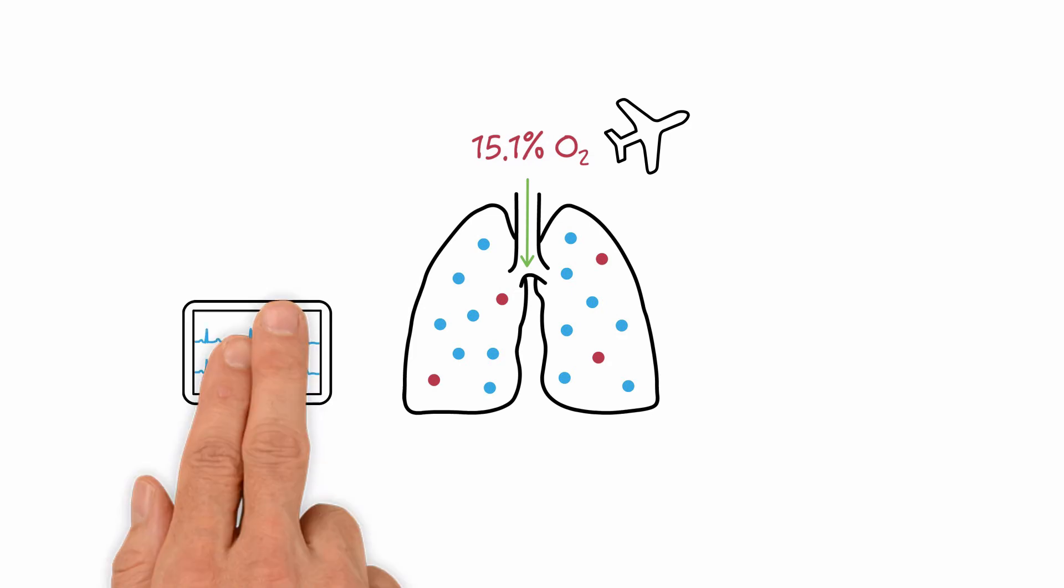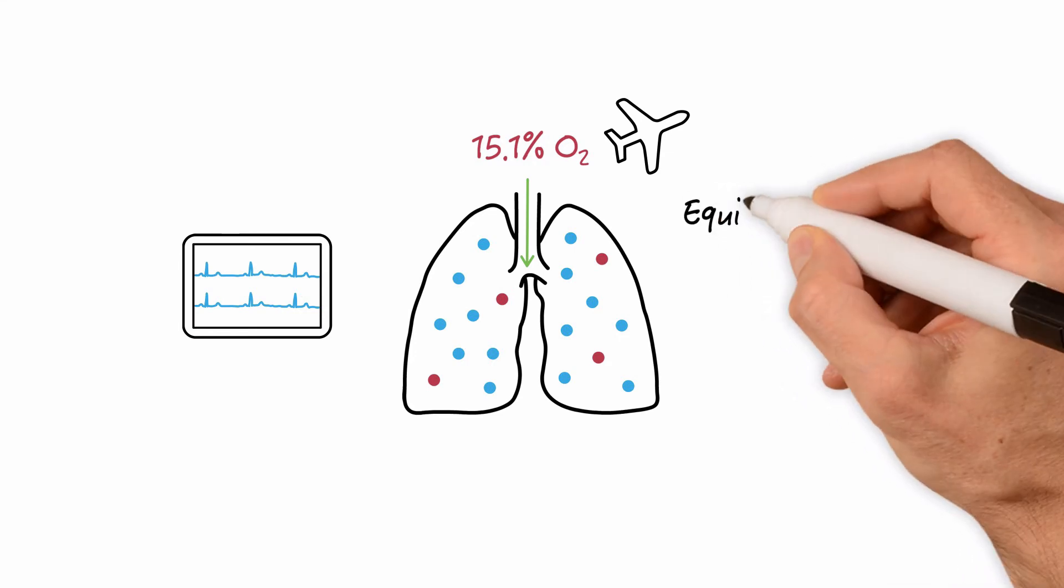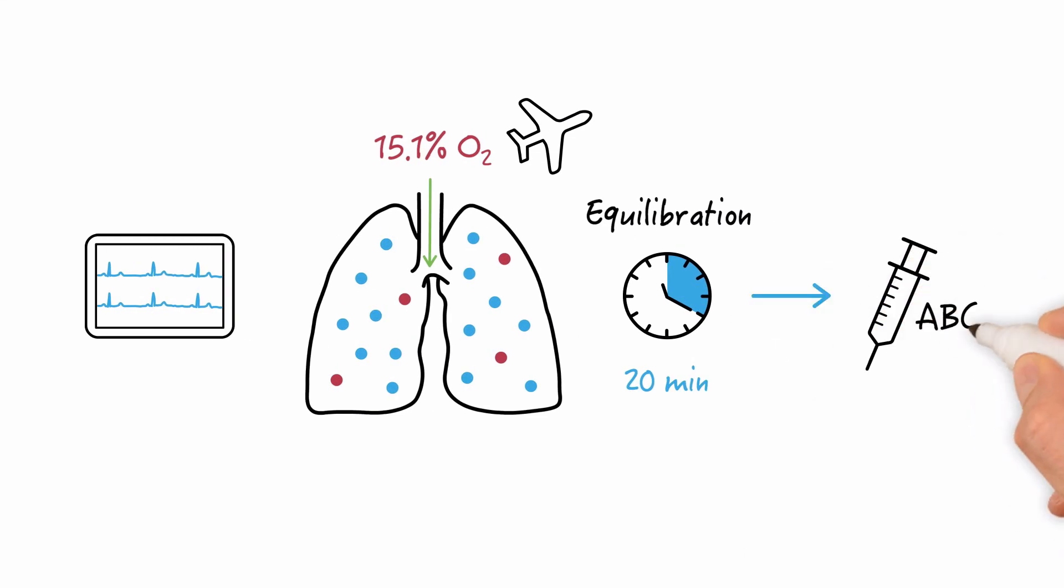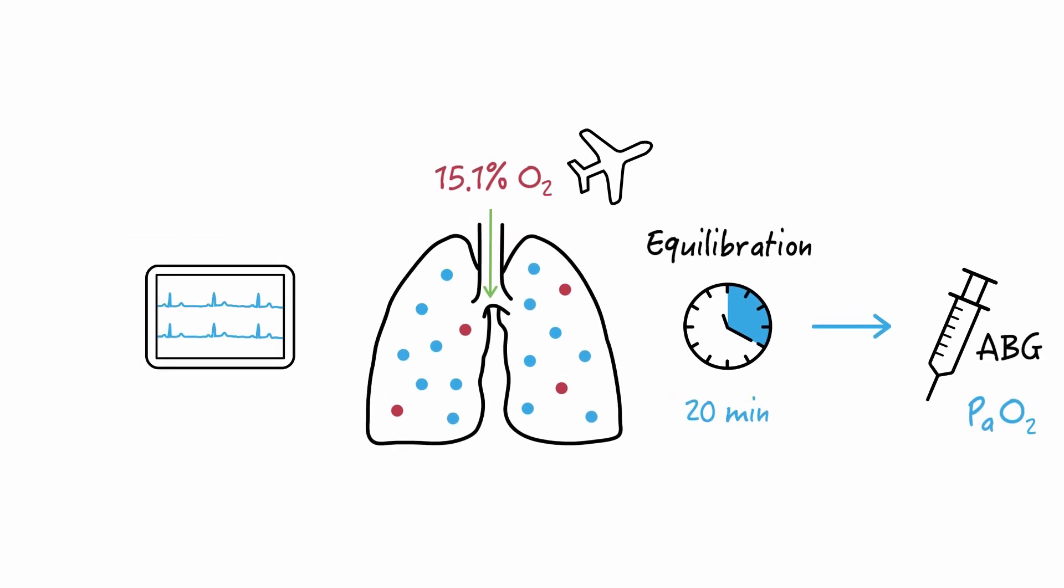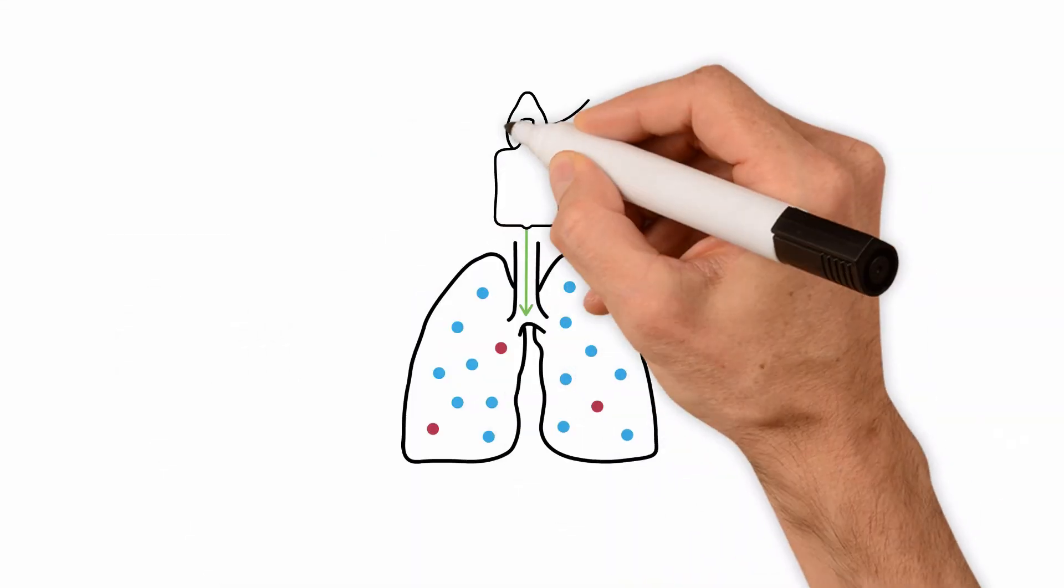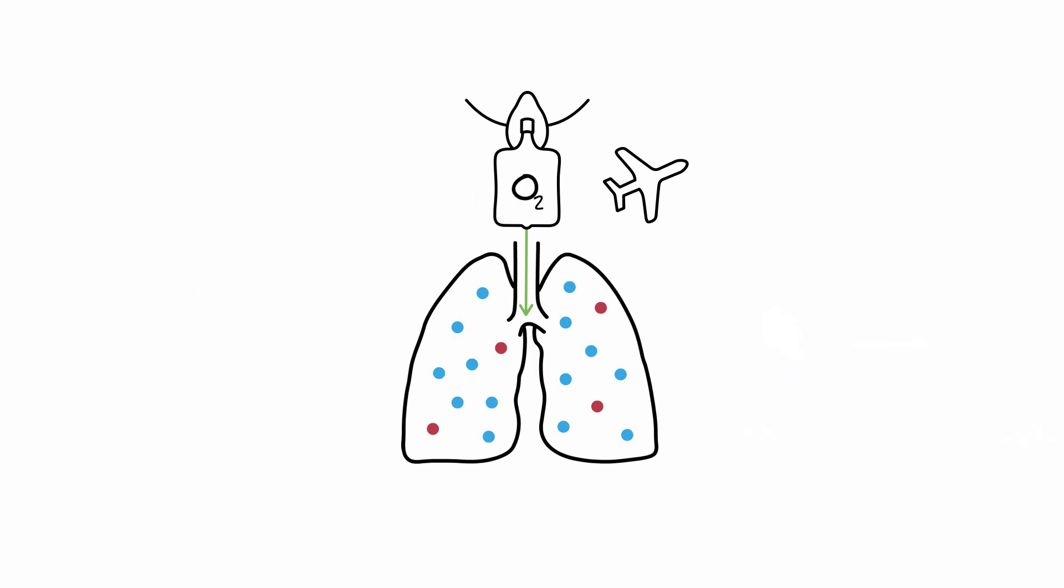The electrocardiogram is monitored. Following a period of equilibration, which generally is about 20 minutes, an arterial blood gas analysis is performed and arterial PO2 measurement obtained. Supplemental oxygen can then be titrated to mitigate the drop in oxygen saturation or PO2 and a prescription for supplemental oxygen use during flight created.